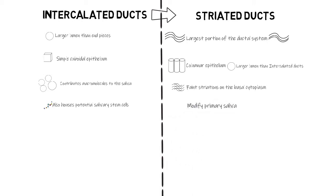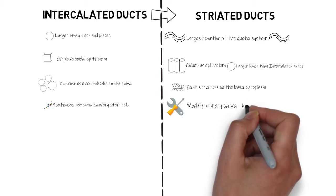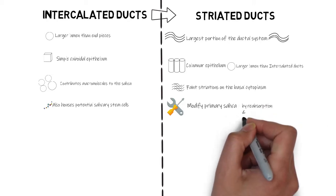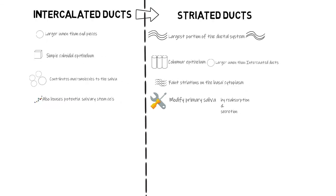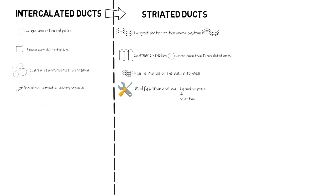The striated ducts play a very important role: modification of the primary saliva. They do this by reabsorbing some components while excreting others. The cytoplasm of striated ductal cells has numerous small secretory granules and vesicles that play an important role in the modification of the primary saliva received from the intercalated duct.